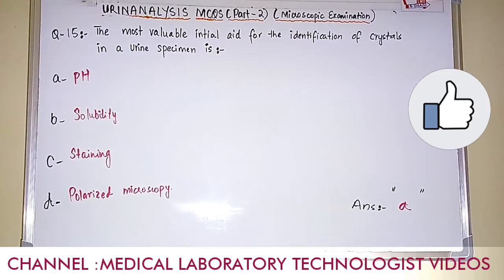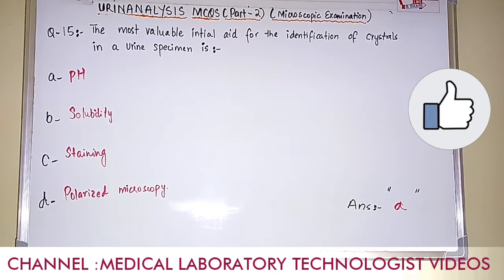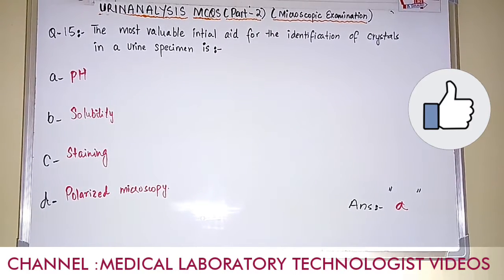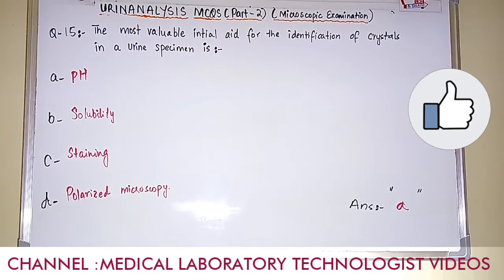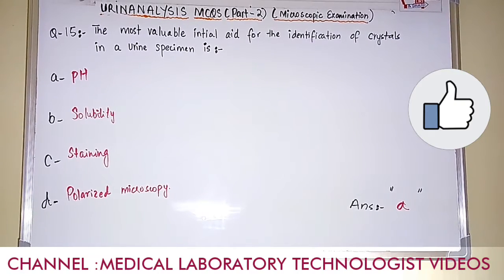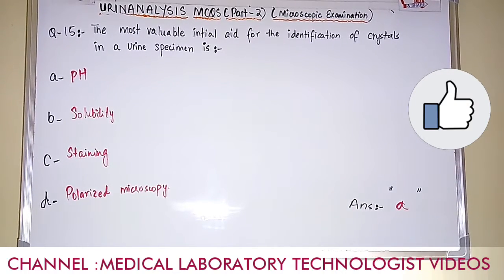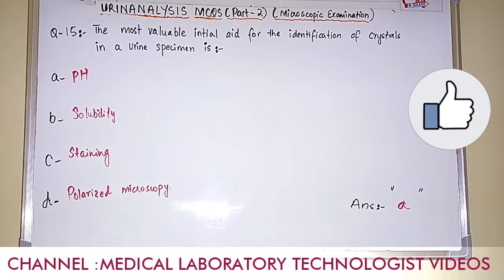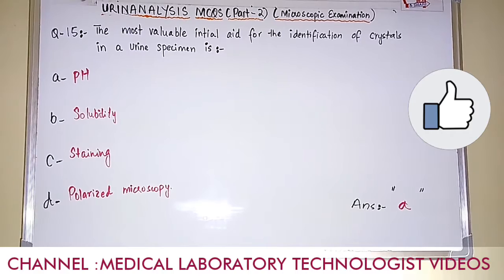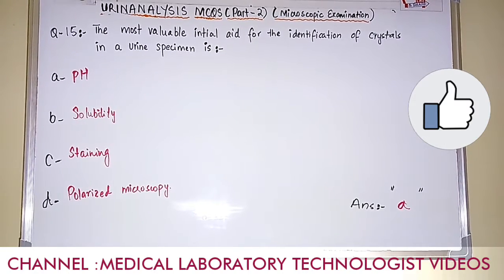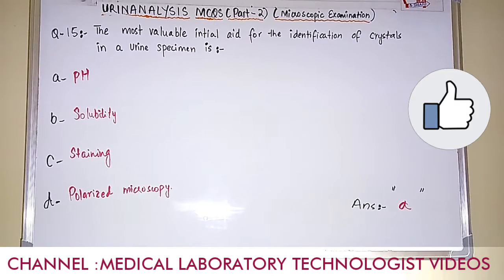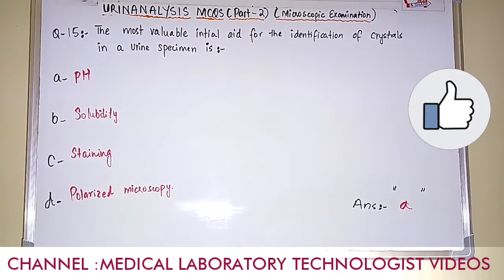Question number 15. The most valuable initial aid for the identification of crystals in a urine specimen is. Option A: pH. Option B: solubility. Option C: staining. Option D: polarized microscopy. The answer is option A, pH. When you observe urine microscopy and see crystals, you must first know the pH. pH is the most valuable initial aid for the identification of crystals in a urine specimen.